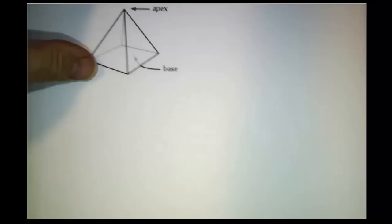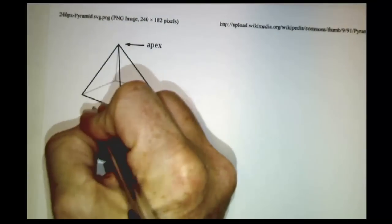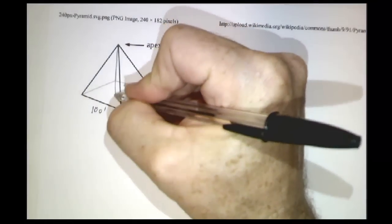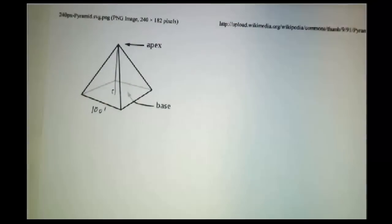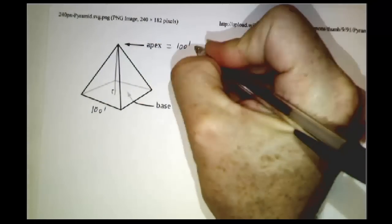So let's work an example. Let's figure out the volume of Pharaoh's tomb. So we've got a pyramid, and let's suppose that the pyramid has a 100-foot base. And let's suppose that the height of the pyramid, so the apex of the pyramid, is 100 feet off the ground.